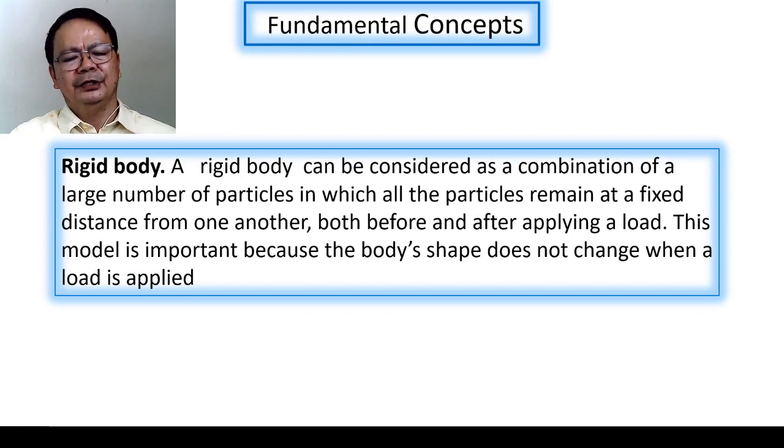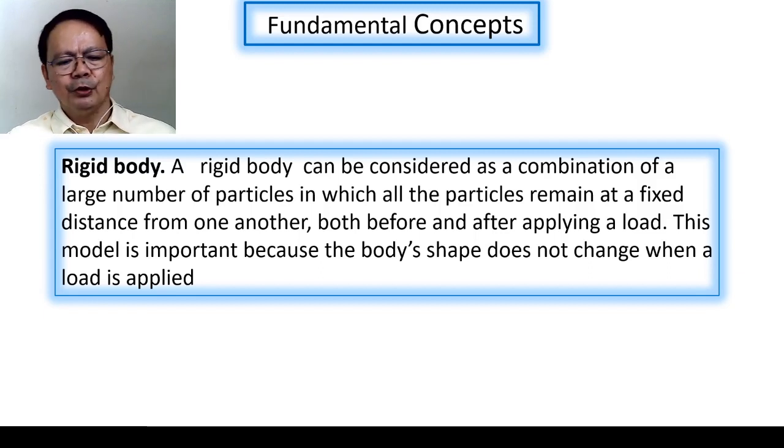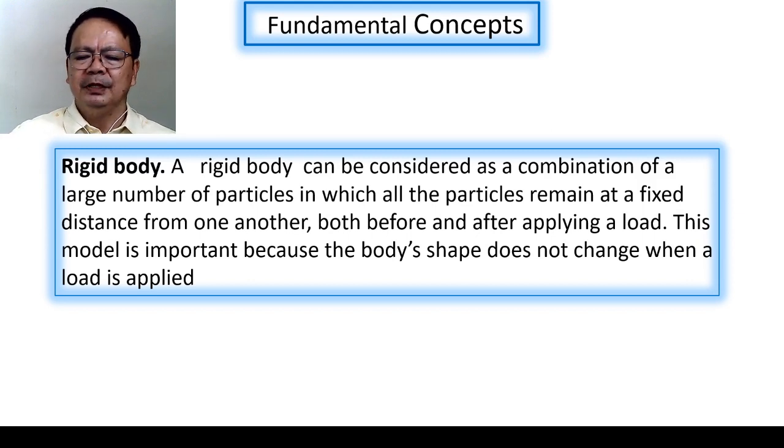We also have the term rigid body. And what are rigid bodies? A rigid body can be considered as a combination of a large number of particles, in which all the particles remain at a fixed distance from one another, both before applying and after applying a load. This model is important because the body shape does not change when the load is applied. In other words, whenever the body does not change its shape when they are subjected to an applied load, then the body is said to be rigid.